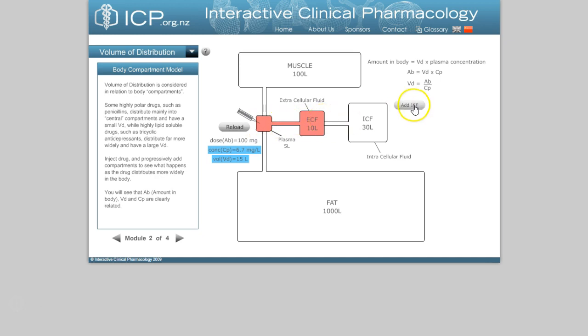And then some drugs redistribute also into the intracellular fluid. So now I measure the concentration, and it's only 2.2 milligrams per liter. The math says that comes out to 45 liters. Wow, 45 liters is about how much water is in a person.